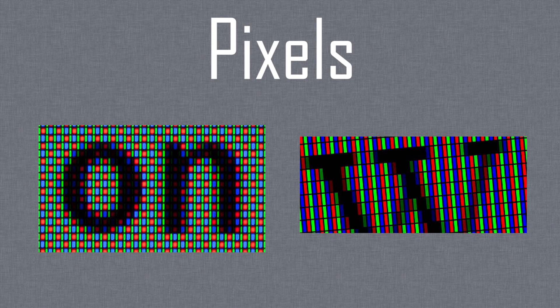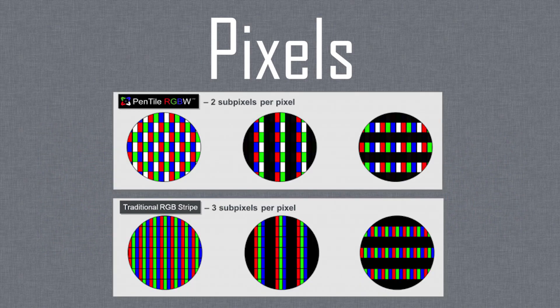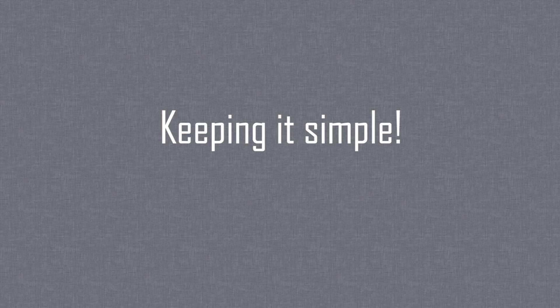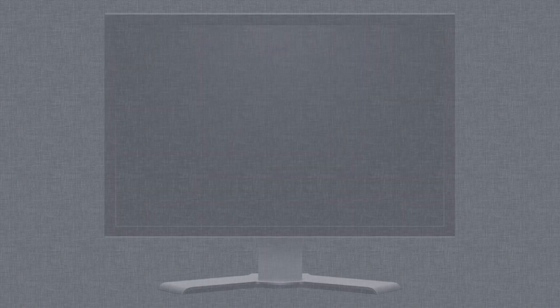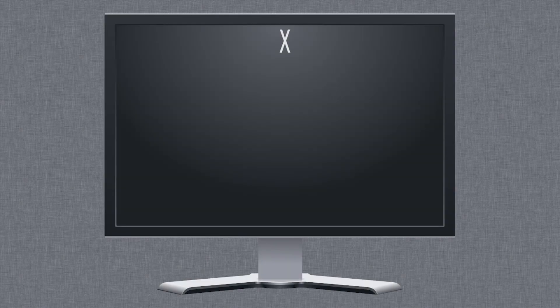To start, individual pixels on a display contain a certain number of subpixels for each color. There are different display technologies like pentile displays that have fewer subpixels per pixel and therefore tend to look a little bit worse when displaying the color they're missing. But for the sake of simplicity, let's assume that all displays are made up of pixels with red, green, and blue subpixels. When we're talking about resolution, we tend to refer to it in its simplest form — the X by Y form, where X is the number of pixels in the horizontal direction and Y is the number of pixels in the vertical direction.